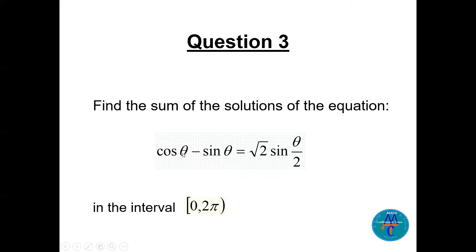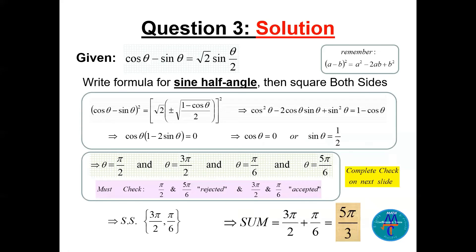Question number three: find the sum of the solutions of cosine theta minus sine theta equals root 2 times sine of theta over 2, on the interval zero to 2pi. We square both sides since there is no direct formula for cosine theta minus sine theta. Using (a - b)² = a² - 2ab + b², and the half angle formula for sine of theta over 2, squaring gives cosine squared theta minus 2 cosine theta sine theta plus sine squared theta equals 1 minus cosine theta.